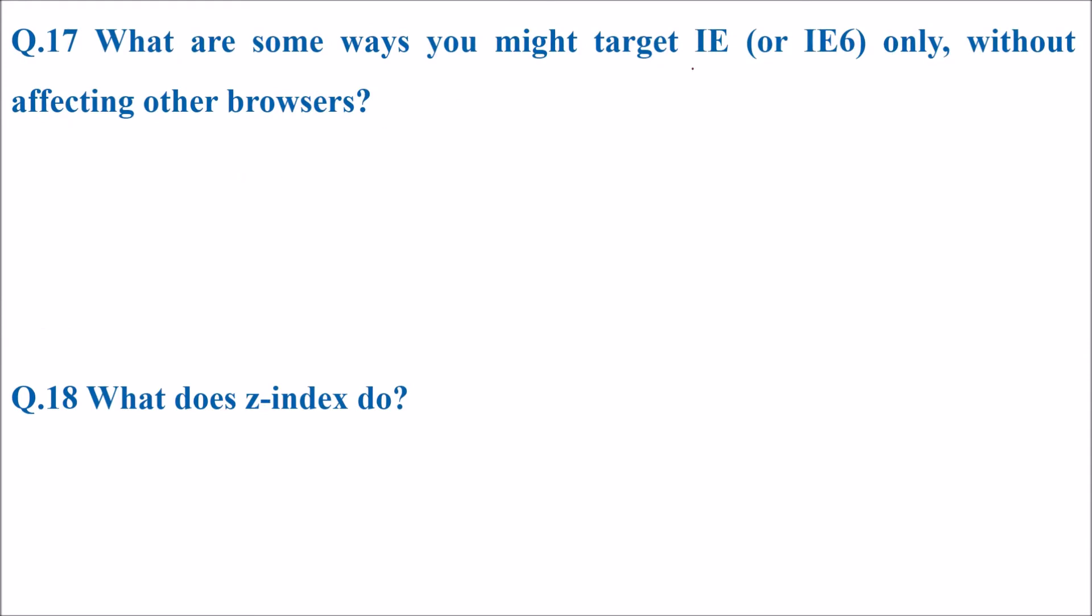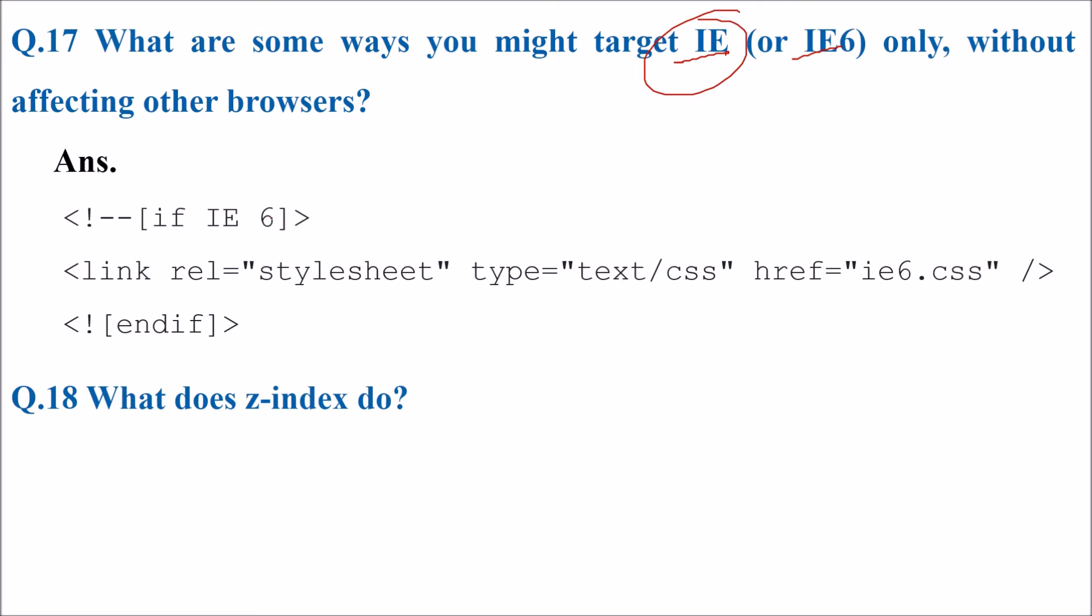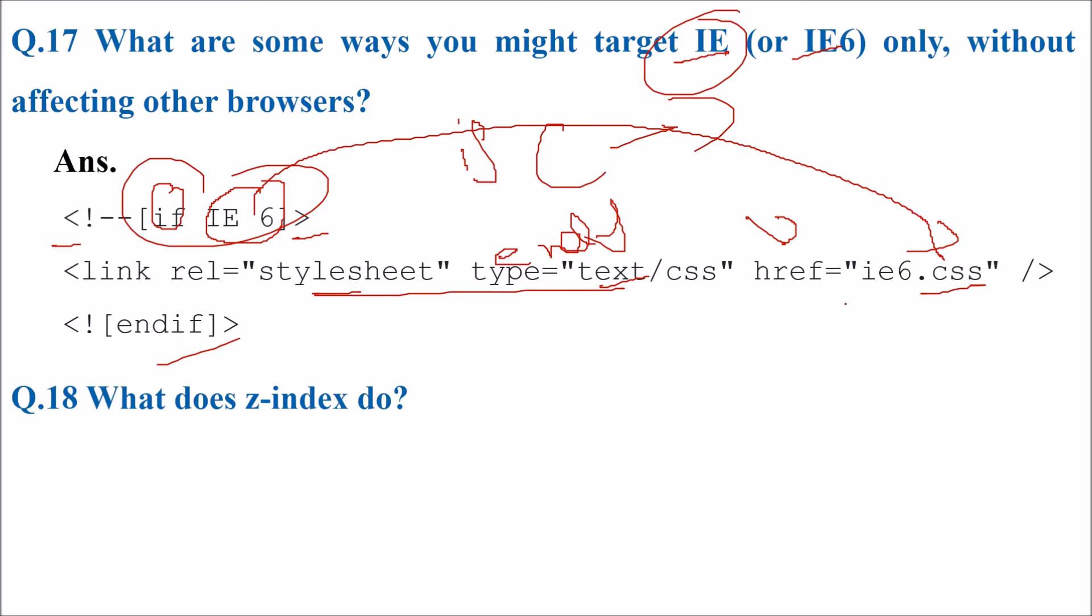What are some ways you might target IE or IE6 only without affecting other browsers? This is the way. If not IE6, then link rel equals stylesheet type text/css, the reference will be to IE6.css. So it targets IE6 otherwise not.